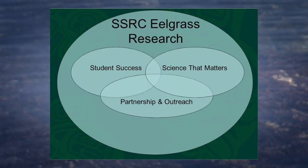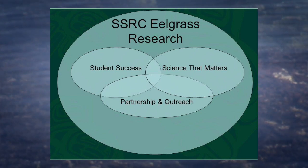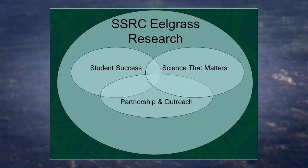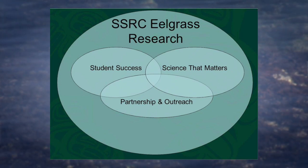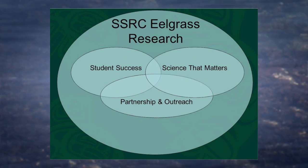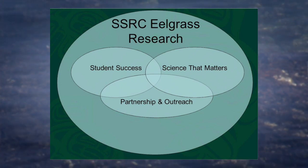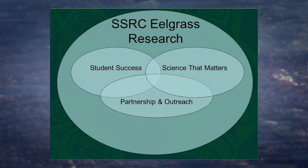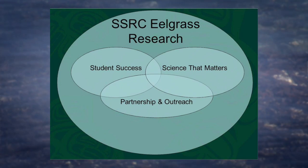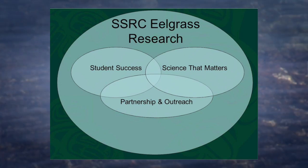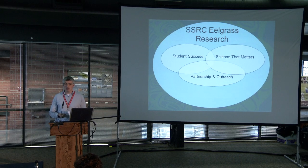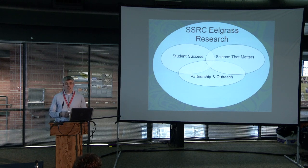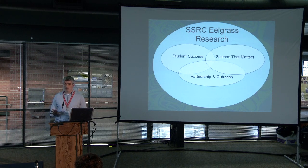We approach research using a conceptual model that all research we do must have three components: it needs to support student success, we're a small undergraduate student-centered institution; it must support science that matters; and it has to have an aspect of partnership and outreach. I'm going to talk about two projects focused on eelgrass using this model. We have a variety of other research going on, including some work up in the central coast of British Columbia, but today I'm just talking about our eelgrass work.